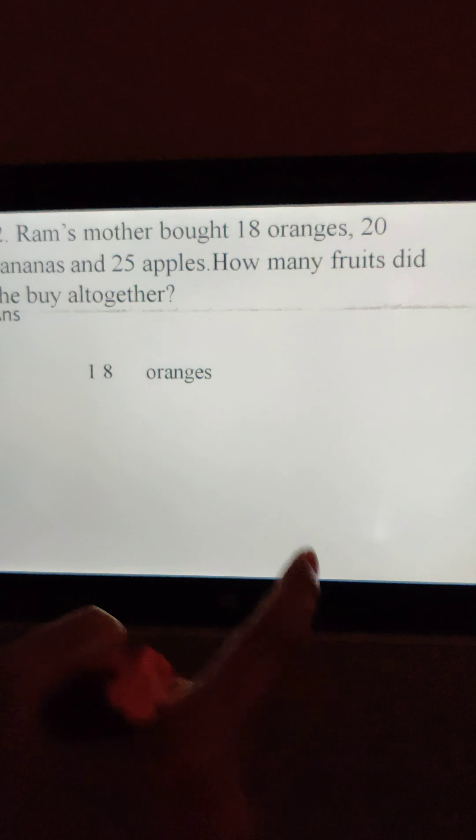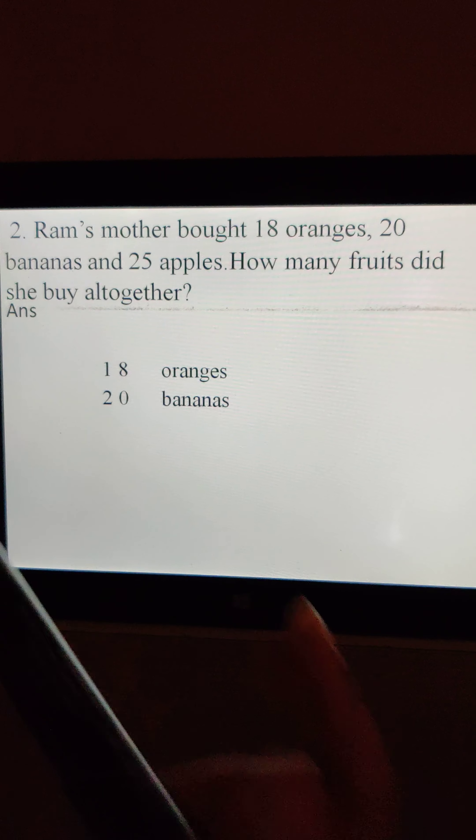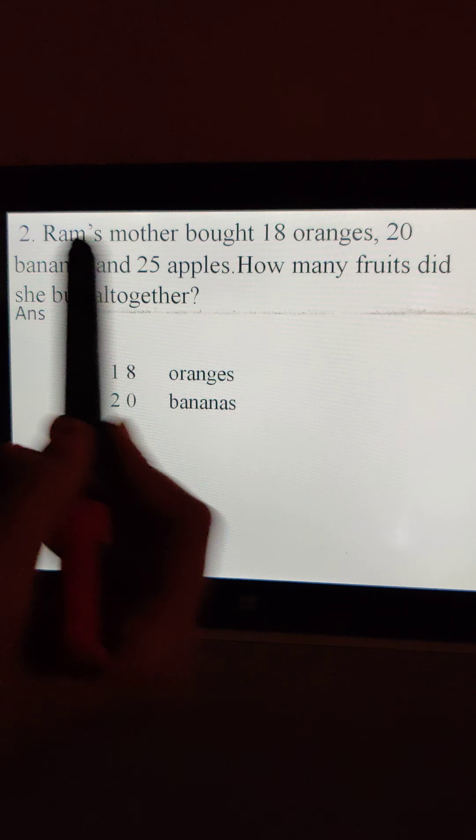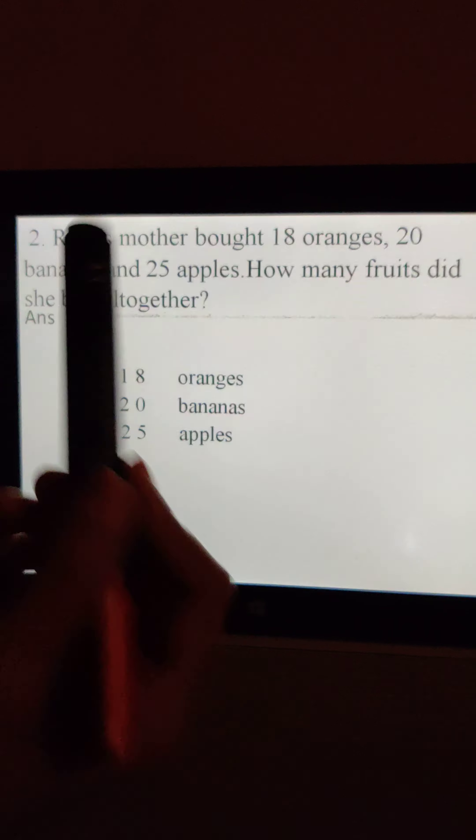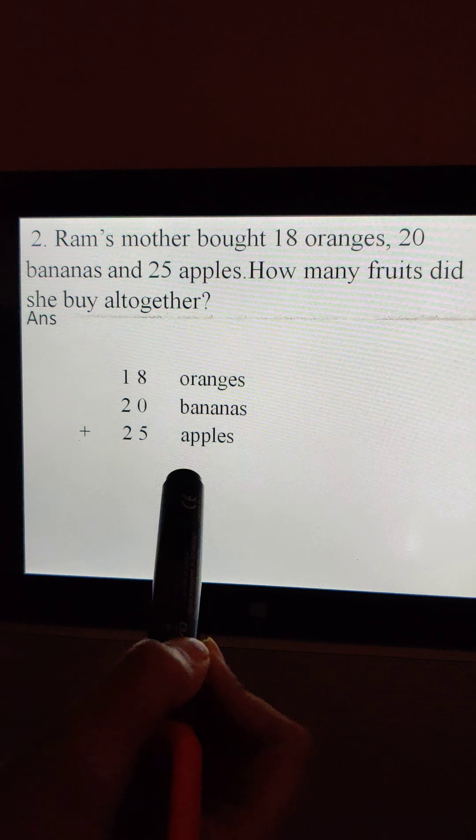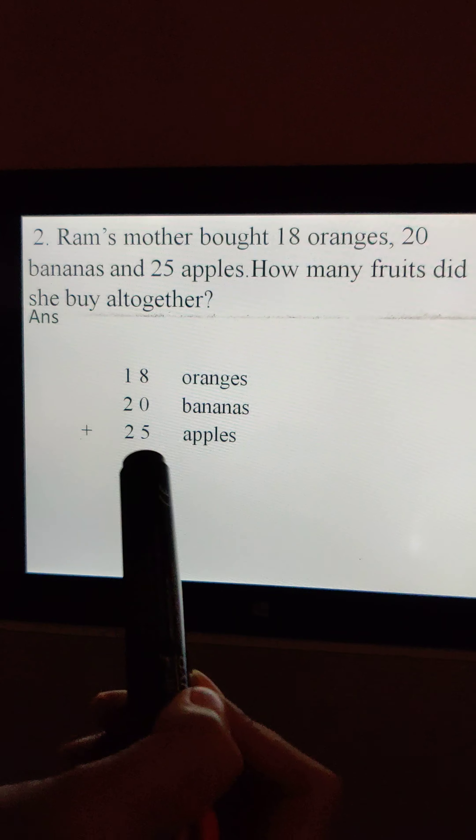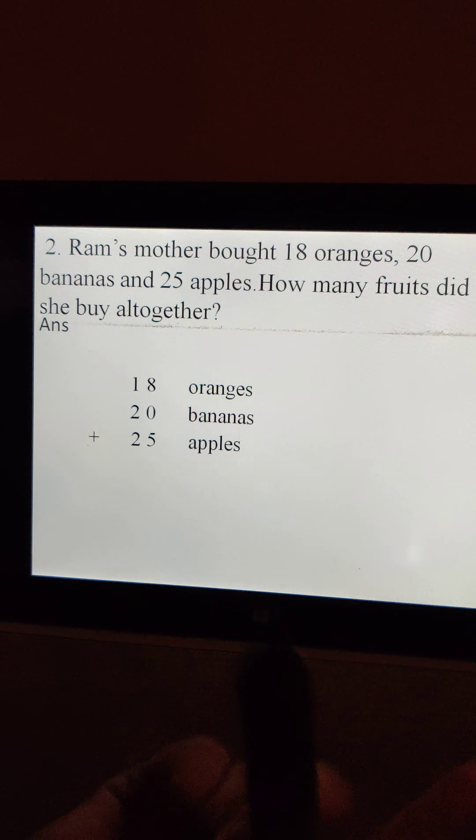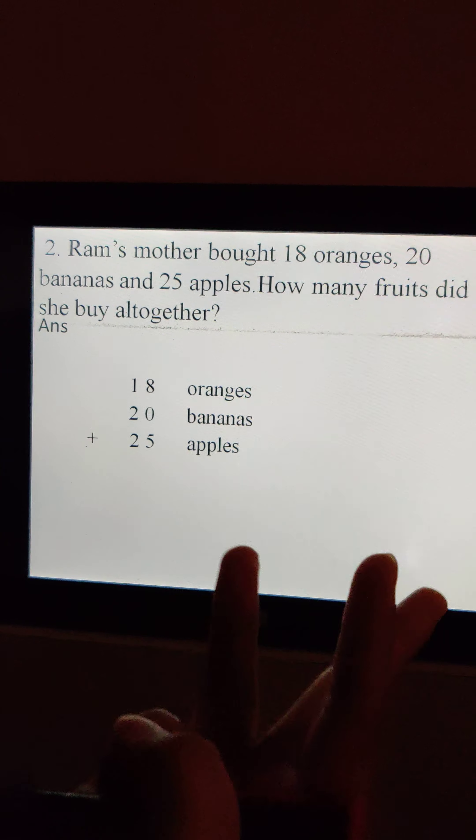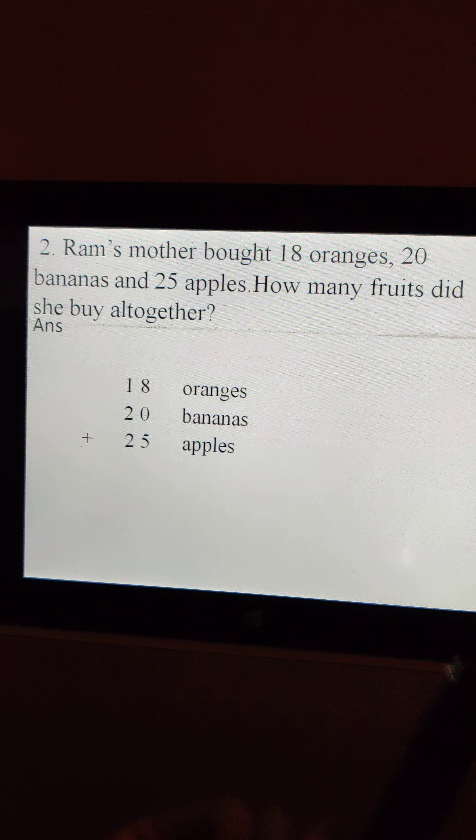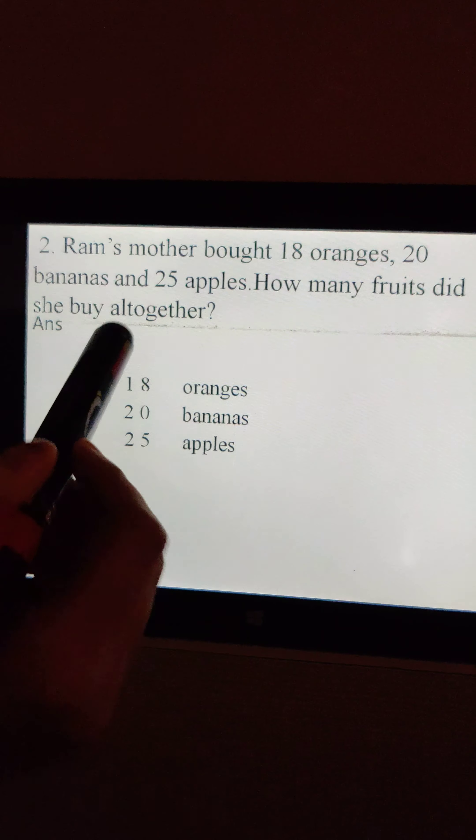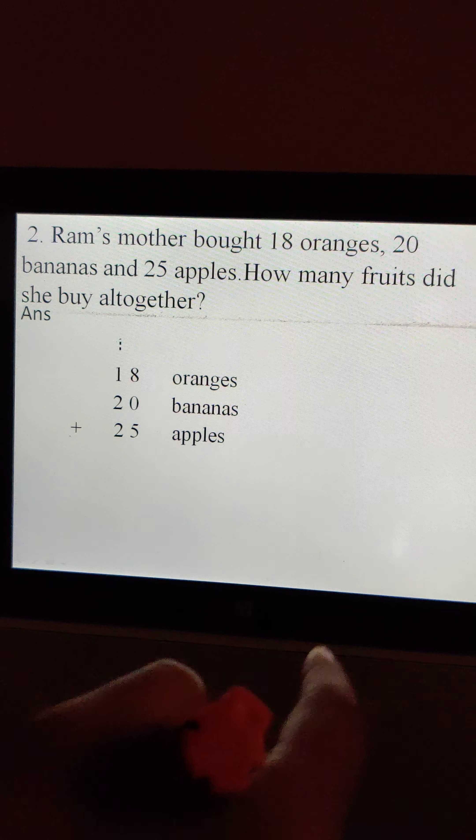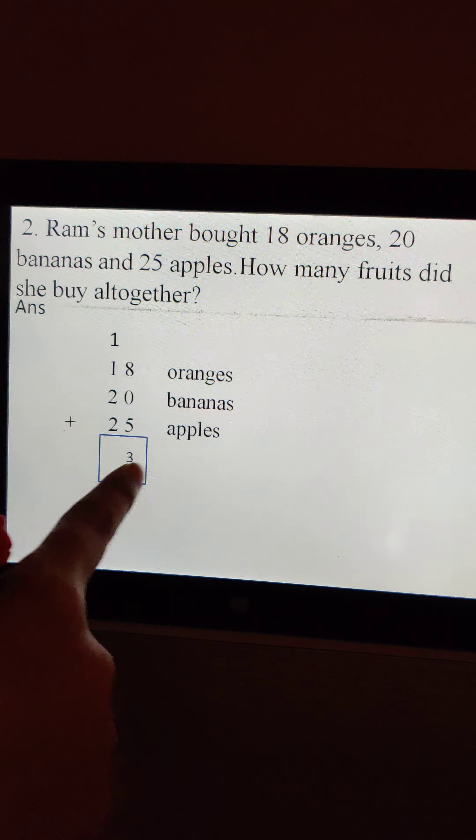How many oranges? 18. Then how many bananas? 20 bananas. Then 25 apples. Then what we need to do? We need to add them. 8 plus 5. What comes? 8 in mind and 5. 9, 10, 11, 12 and 13. So 13 means 1 ten and 3 ones. So we will give here 1 carry and write 3 here.